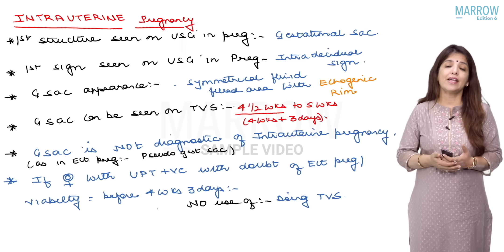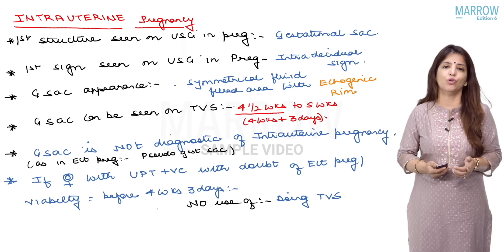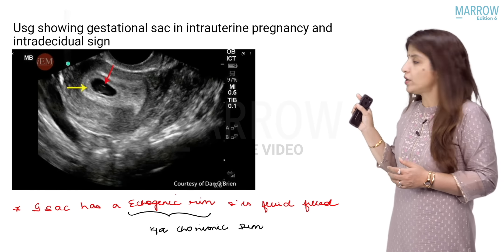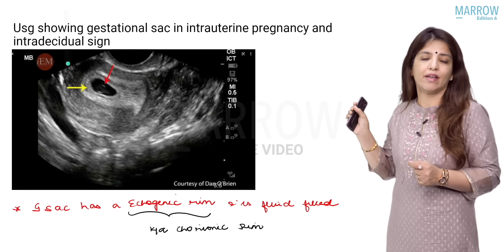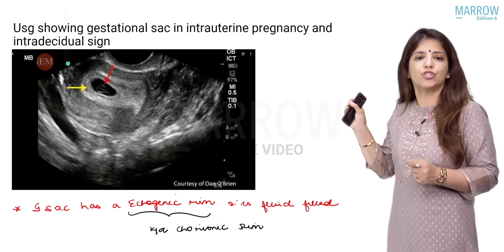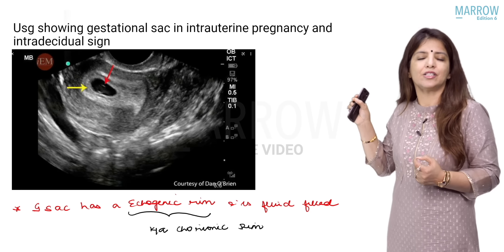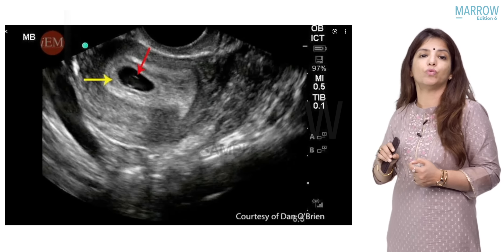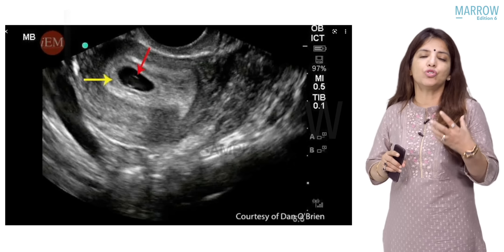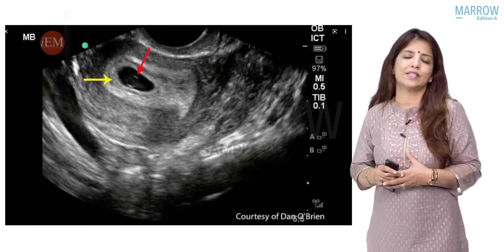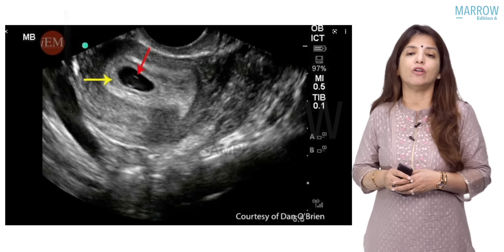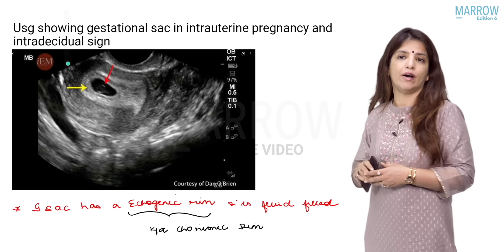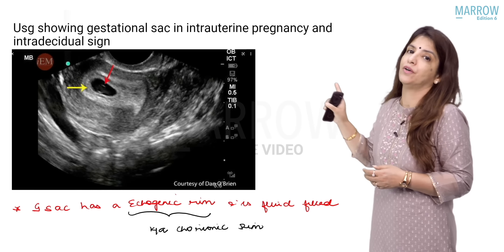In this image, the red color arrow is pointing towards the fluid which is in the cavity — that black color area is a fluid-filled cavity. The yellow arrow is pointing towards the whitish structure surrounding this black fluid-filled cavity. This is the gestational sac: a symmetrical fluid-filled cavity with an echogenic rim, and this echogenic rim of the gestational sac is called the chorionic rim.